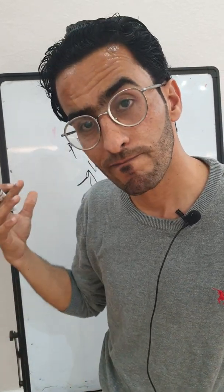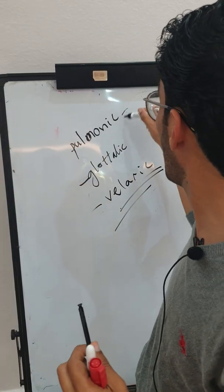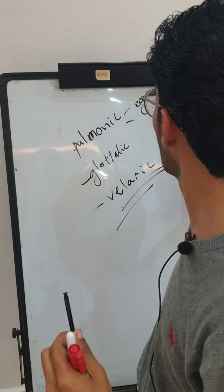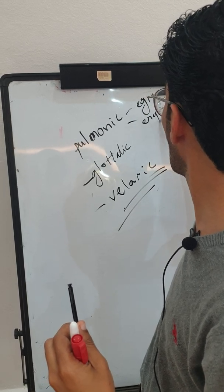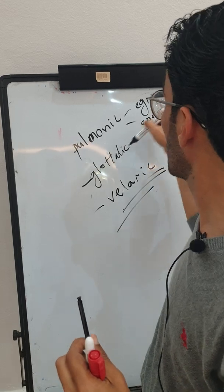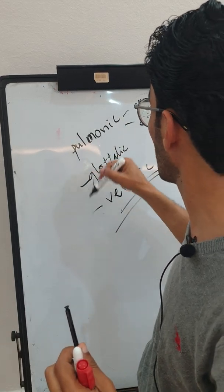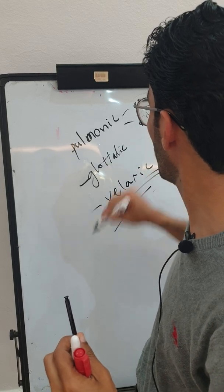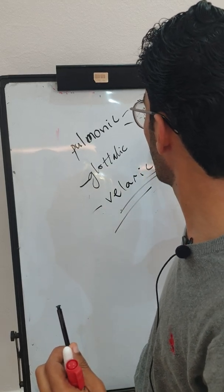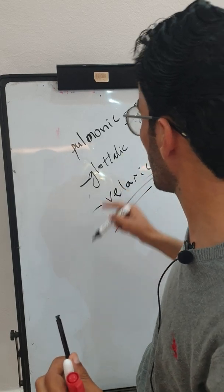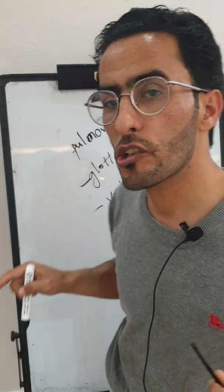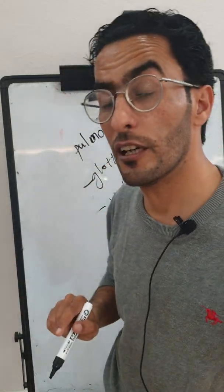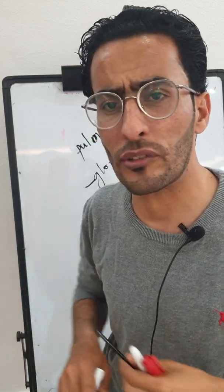So the whole mechanisms total six: pulmonic — we have egressive and ingressive pulmonic airstream mechanism; glottalic — we have egressive and ingressive glottalic airstream mechanism; and velaric — we have egressive and ingressive velaric airstream mechanism. These are all the airstream mechanisms, some used in linguistic acts or spoken languages.